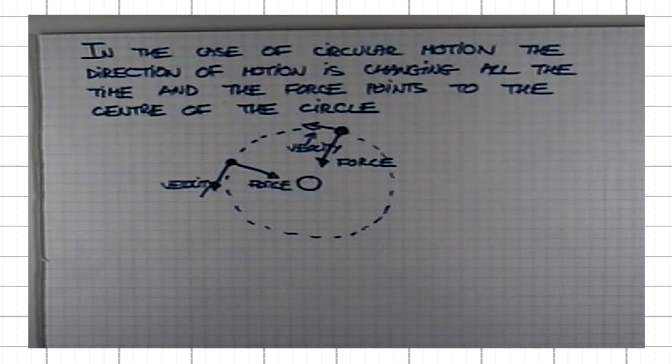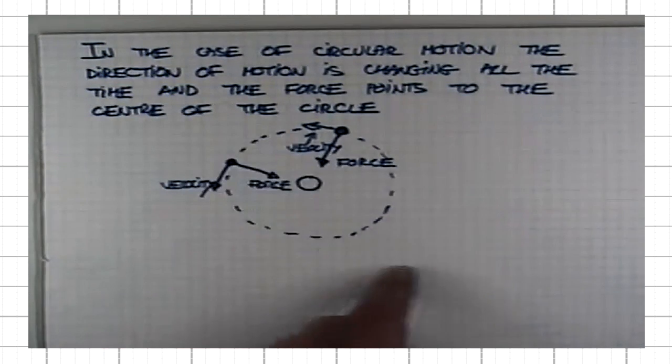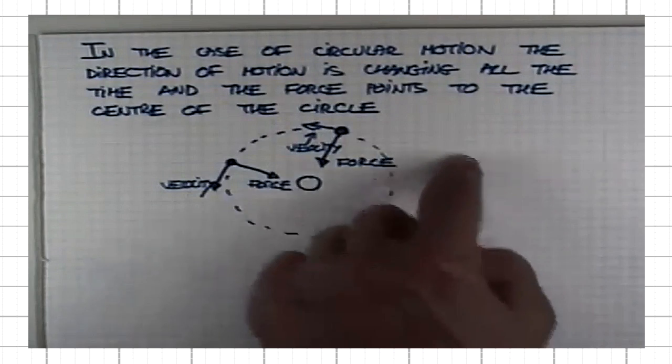If you look at, for instance, the motion of the moon around the Earth, it moves roughly in a circular path. What is the force, in that case, if Newton is correct, that is causing the moon to constantly change its direction of motion?